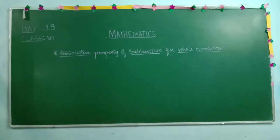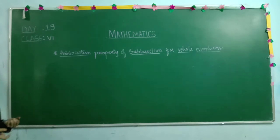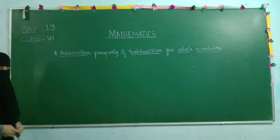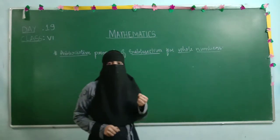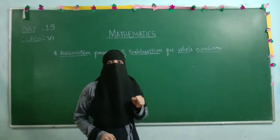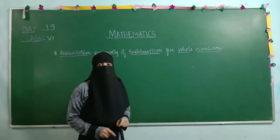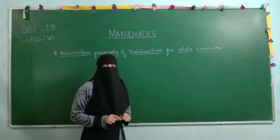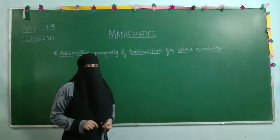Assalamualaikum warahmatullahi wabarakatuhu. Hope you people are good. So children, yesterday we studied about associative property of multiplication for whole numbers. We verified that whole numbers are associative under multiplication and under addition. Today we are going to check out whether whole numbers are associative or not for subtraction and division.